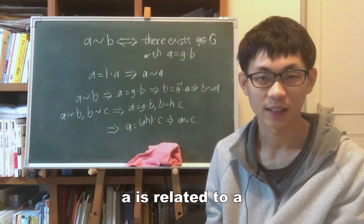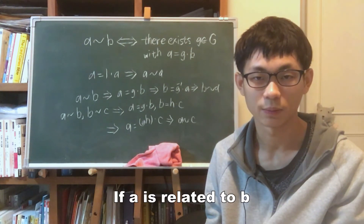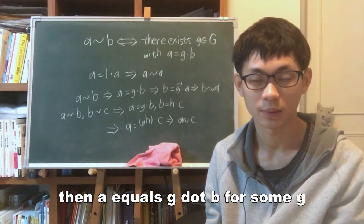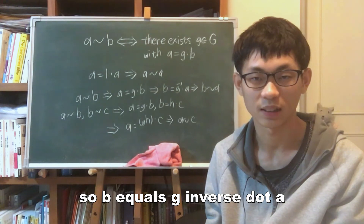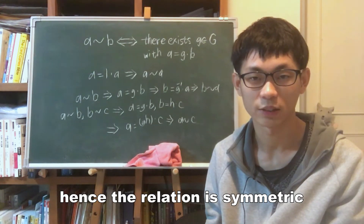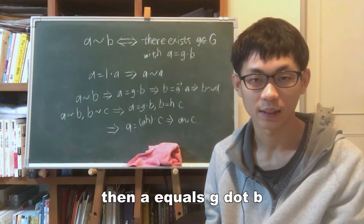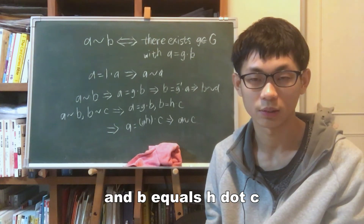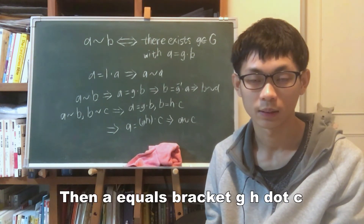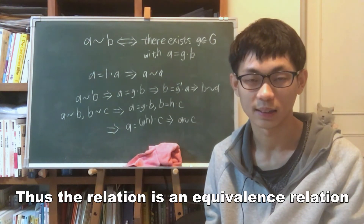Since 1 · a = a for all a, a is related to a and the relation is reflexive. If a is related to b, then a = g · b for some g, so b = g⁻¹ · a and b is related to a; hence the relation is symmetric. If a is related to b and b is related to c, then a = g · b and b = h · c for some g and h, so a = (gh) · c and a is related to c; hence the relation is transitive. Thus the relation is an equivalence relation.